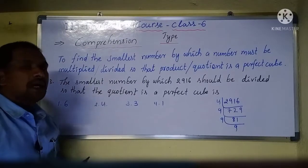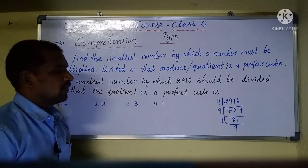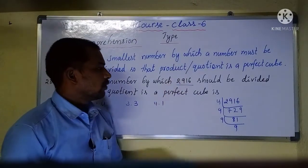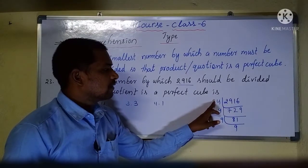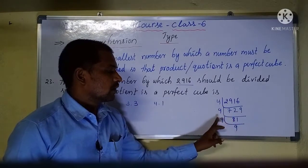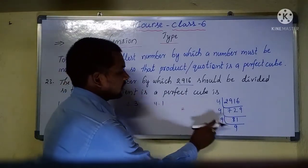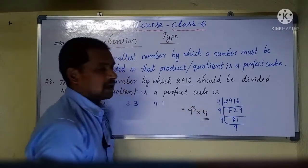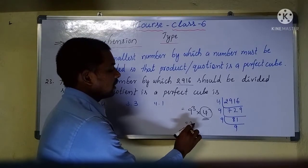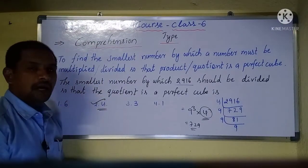Question number 24: the smallest number by which 2916 should be divided so that the quotient is a perfect cube. Dividing 2916 by 4 gives 729, and 729 is 9 cube — a perfect cube. So the factors are 9 cube with an additional 9. Dividing 2916 by 4 gives 729, which is a perfect cube. Option number 2 is the correct answer.